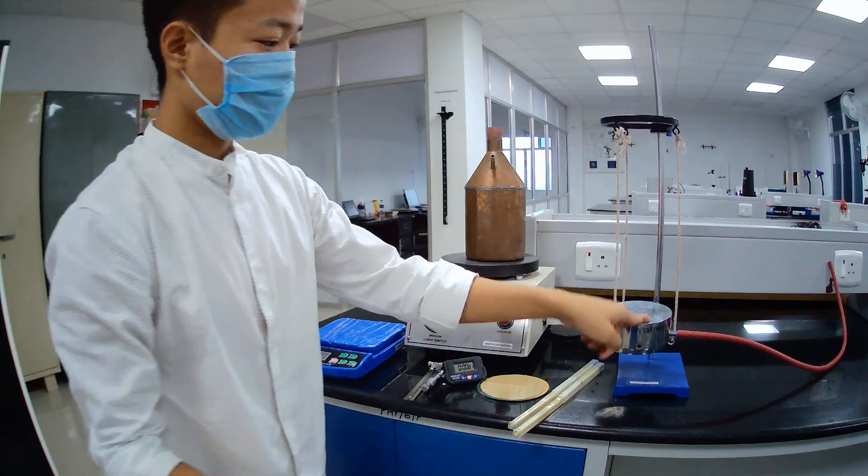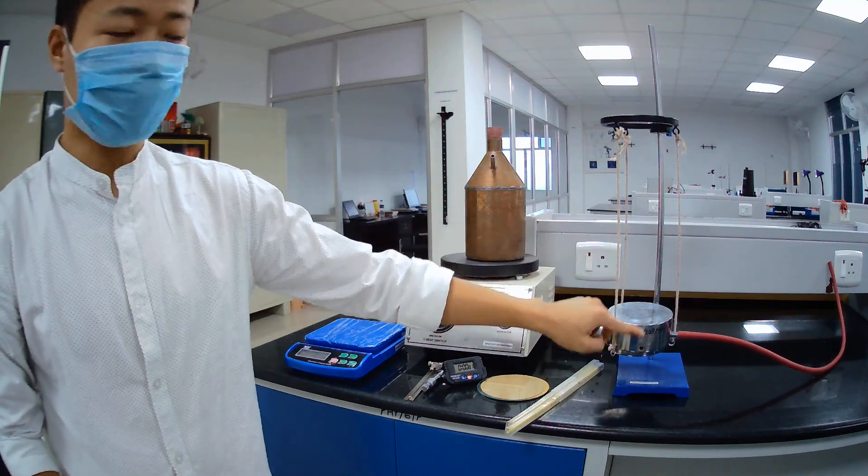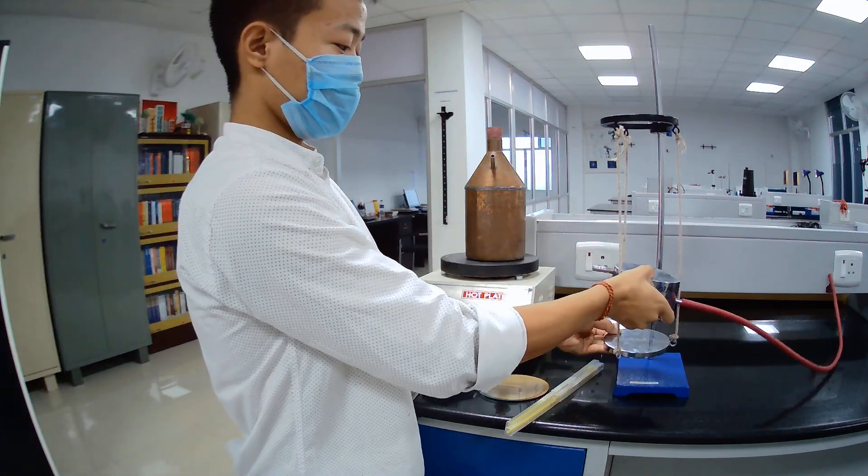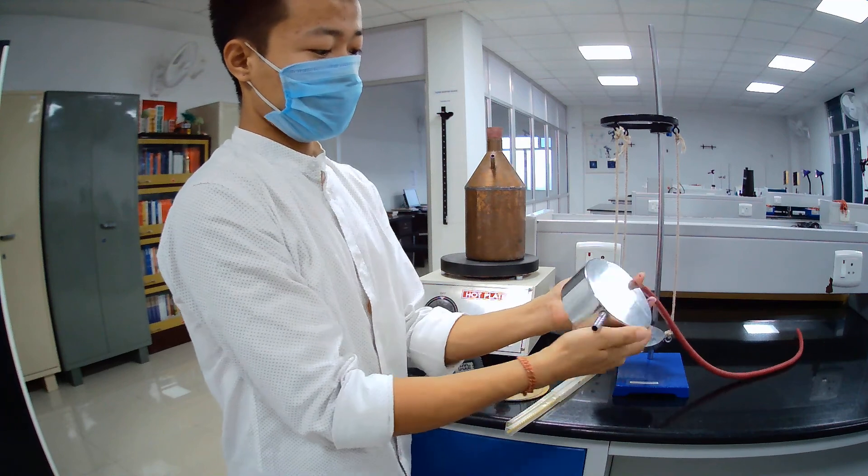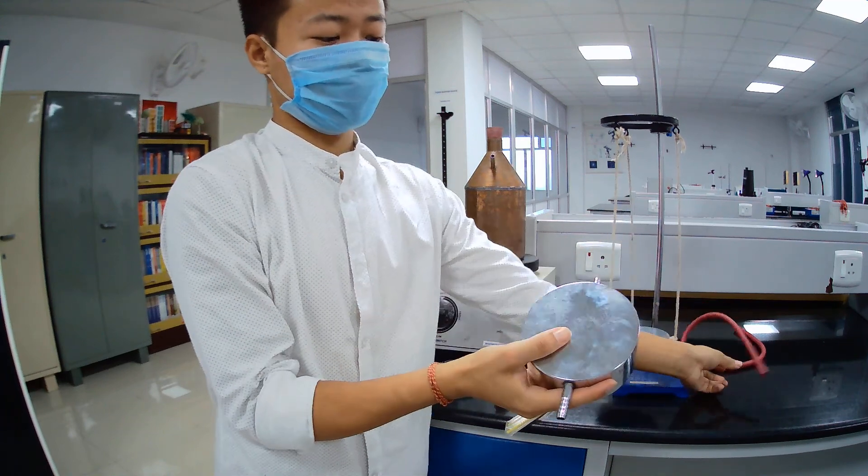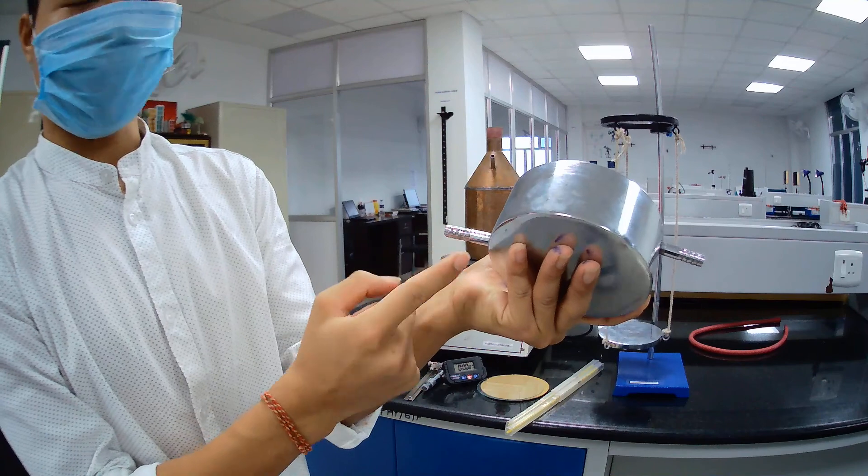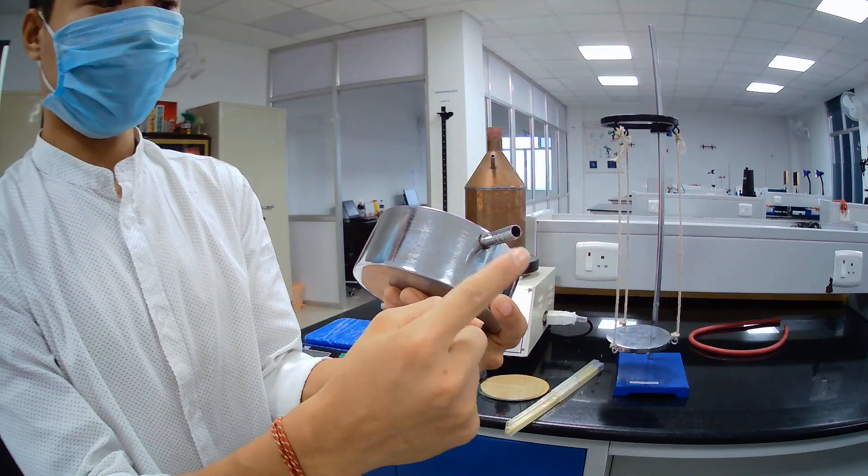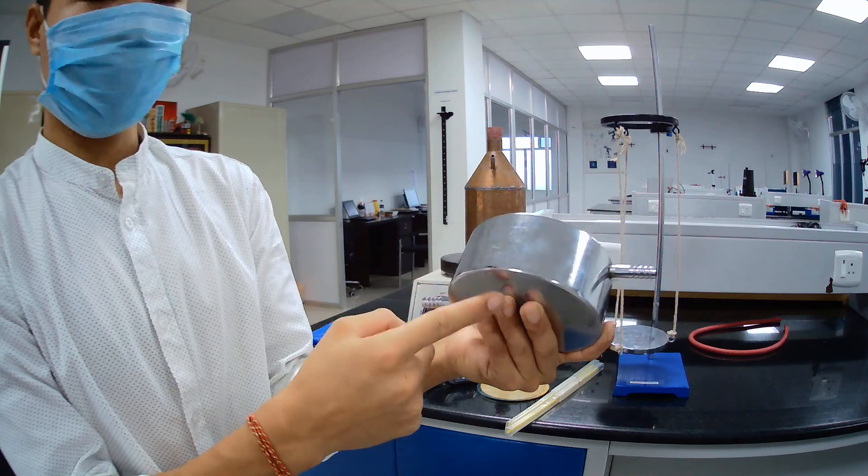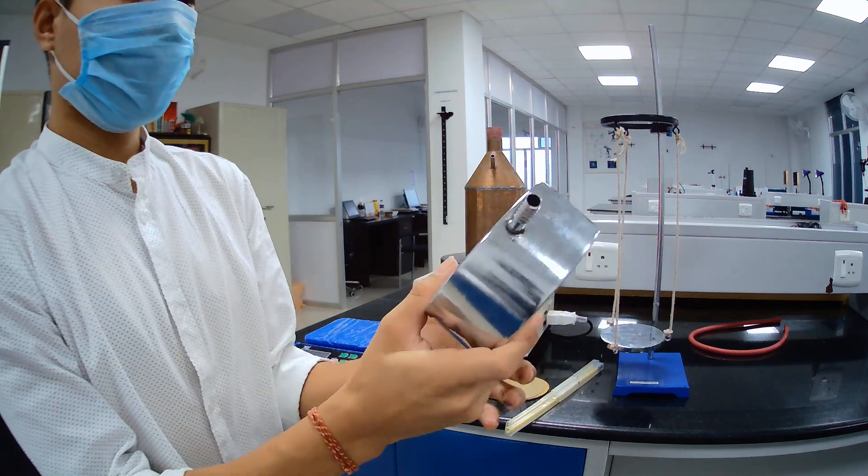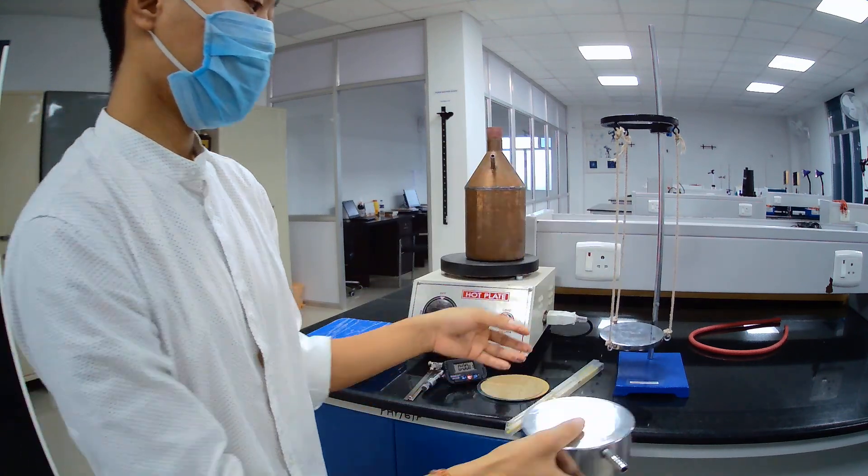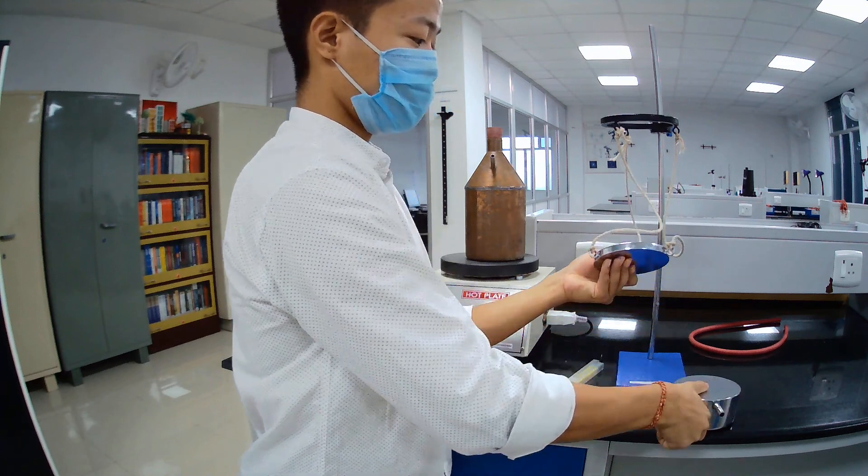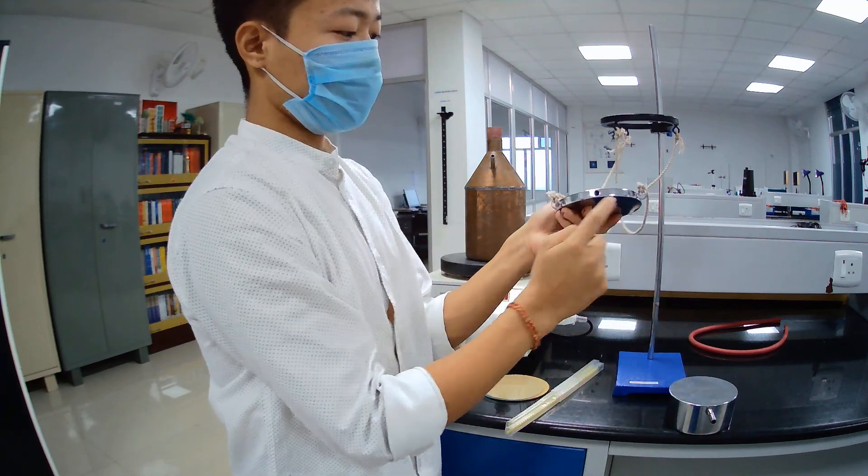This whole setup is Lee's apparatus. We have two disks here. In this disk we have inlet for steam inside, it is hollow, and here is outlet for steam. The steam is used to raise the heat of this disk and then next in this disk we have here...